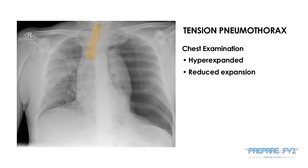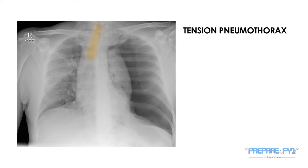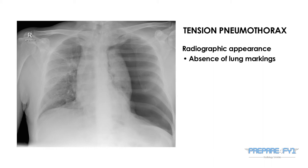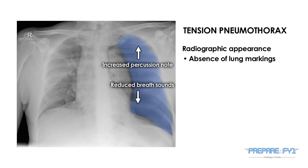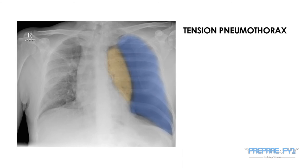This condition causes mediastinal shift. Looking at the radiograph, you can see on the side of the pneumothorax there is a complete absence of lung markings. We have matched this with the clinical findings of increased percussion note and reduced breath sounds. Pressed up against the left heart border, we have outlined the collapsed lung.